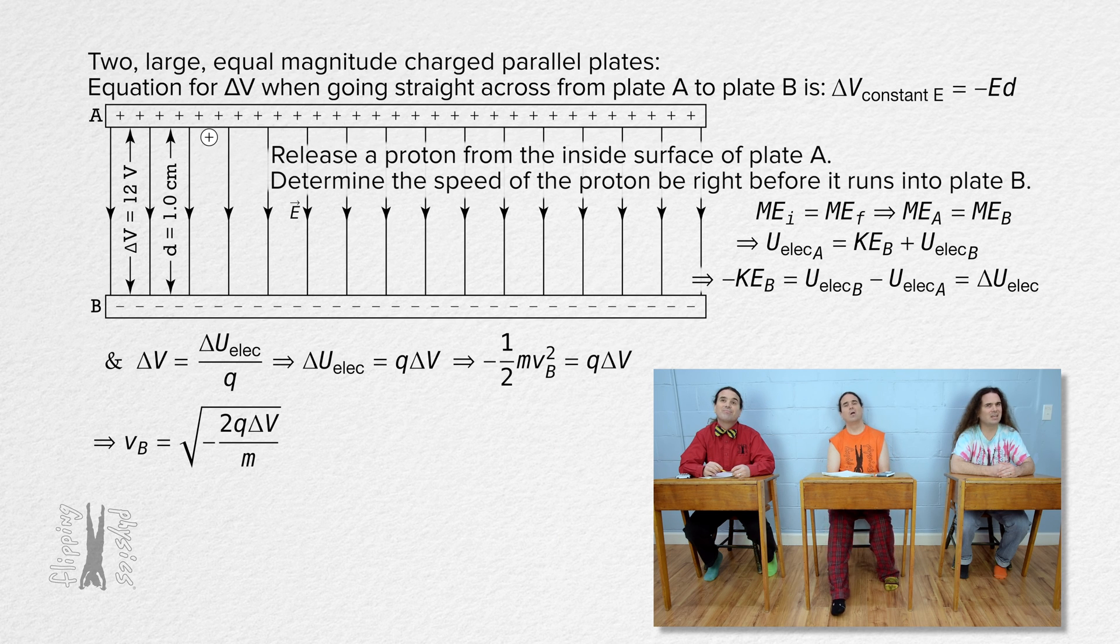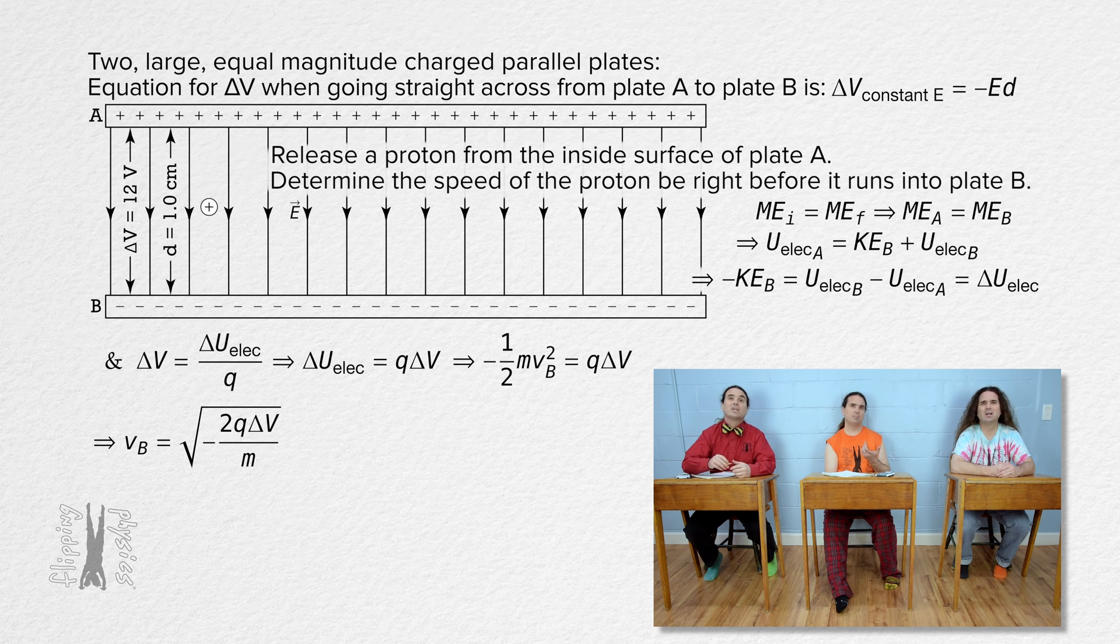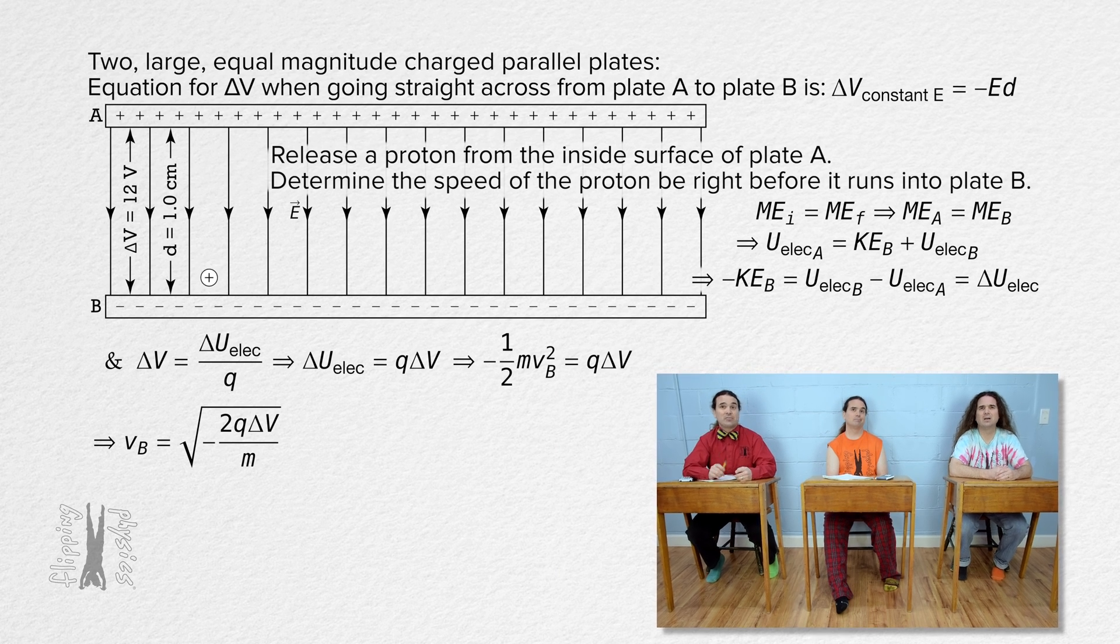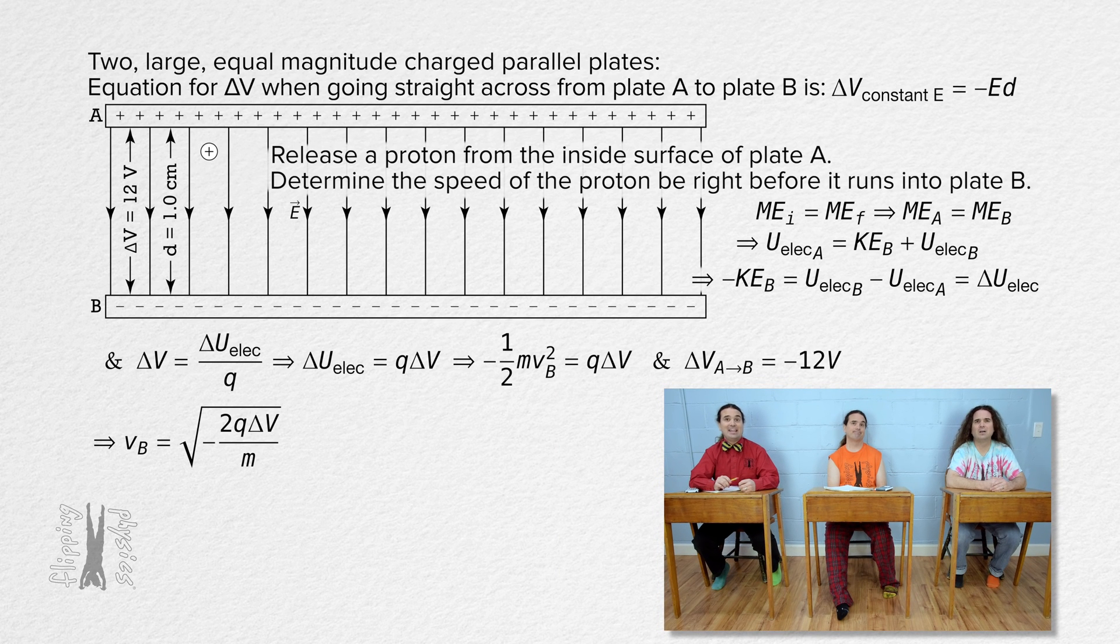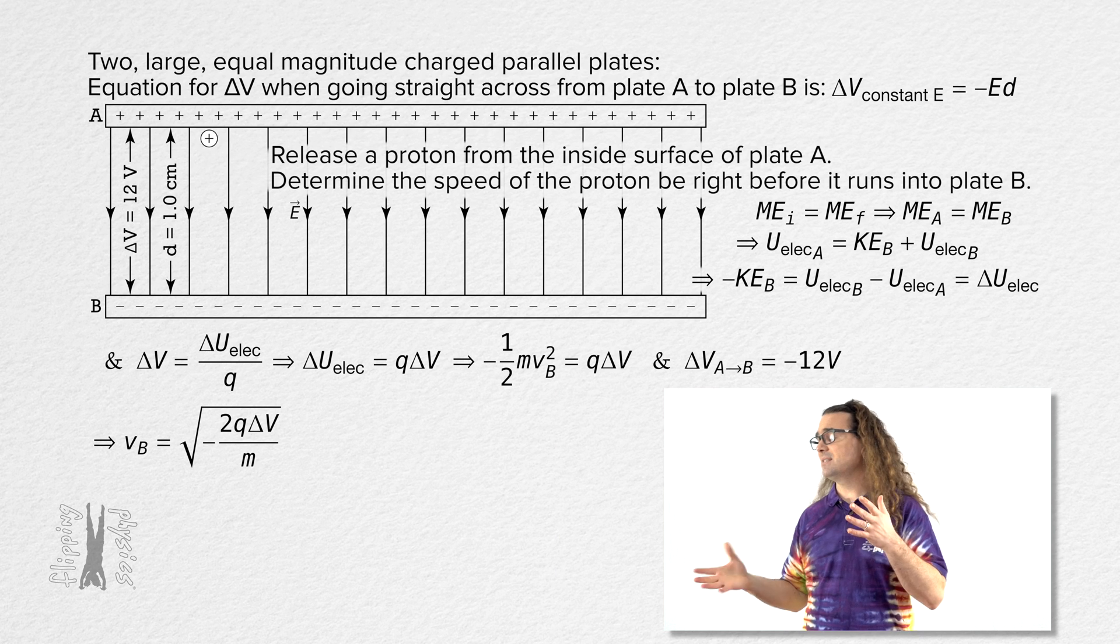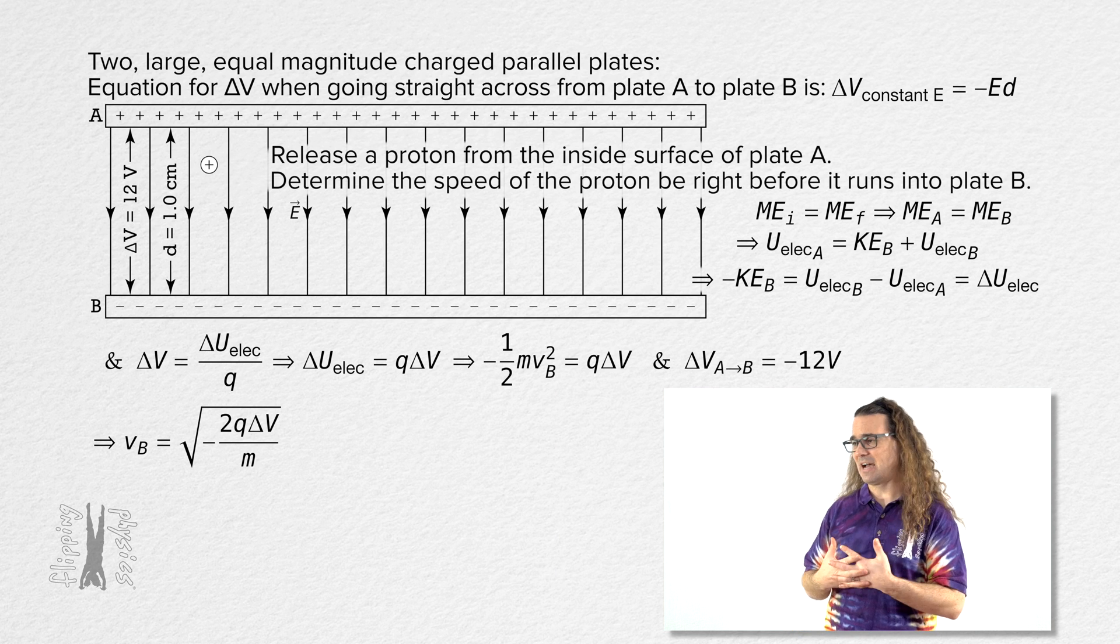As a proton moves in the direction of an electric field, it loses electric potential energy. That means the electric potential difference in the direction of the electric field is negative. Oh, yeah. I think I forgot that. Yes, and sadly, it is often forgotten.